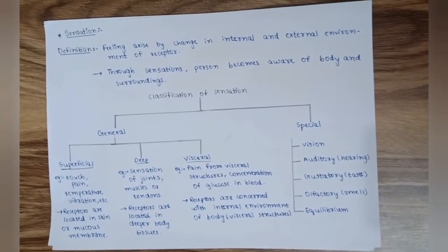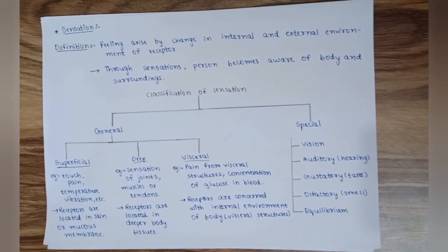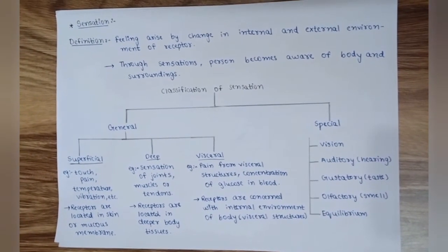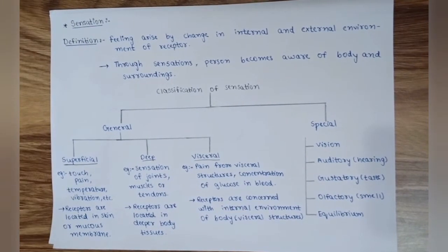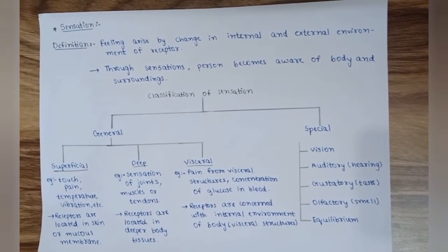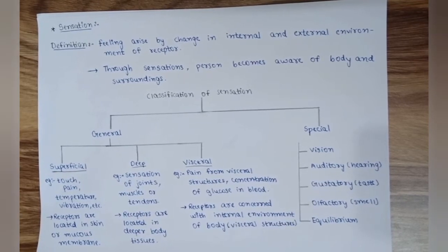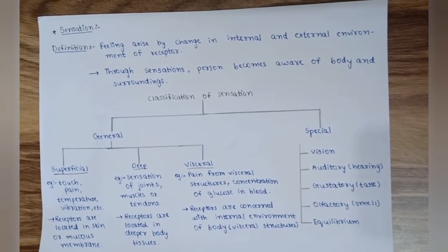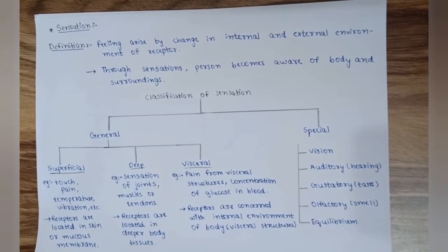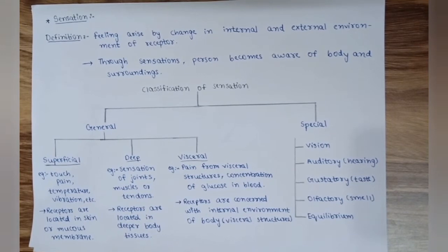Hello everyone, welcome to this channel. We might give up studying the brain and CNS, but CNS is the most interesting topic in physiology. Let's start Part 2 of the sensory system — Part 1 was described previously. The definition of sensation is: a feeling that arises by a change in the internal and external environment, through which a person becomes aware of their body and surroundings. Sensation is classified into two types: general and special.